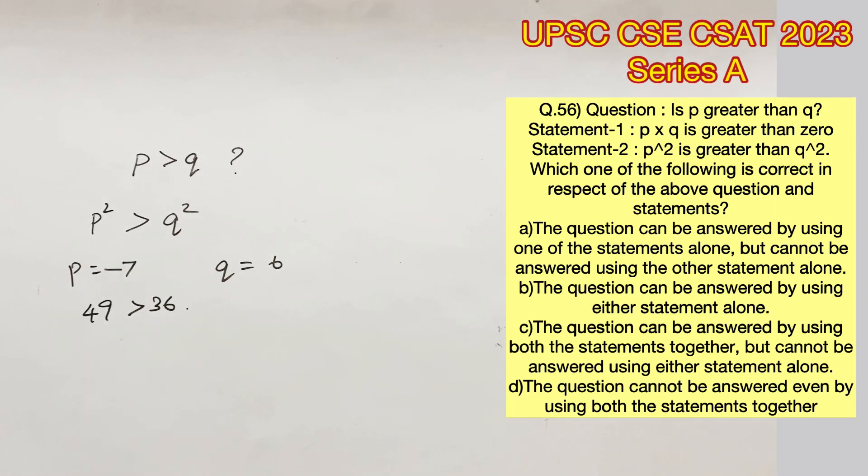But if you substitute minus 7 in the place of P, you're going to get the same values when you square them. Therefore, we cannot determine if P is greater or lesser than Q.